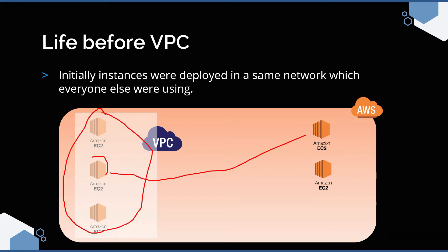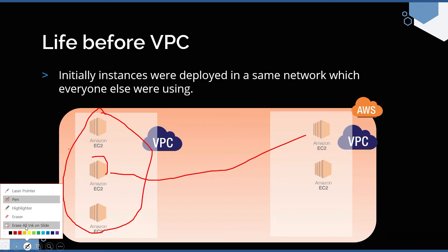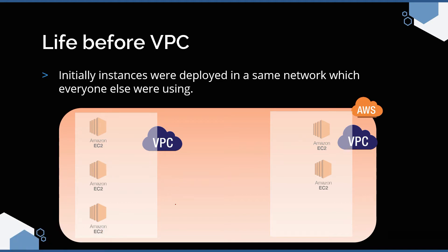Let's assume you have set up your infrastructure within your VPC and your competitor has also set up their infrastructure in their corresponding VPC. Do you think these two applications deployed in separate VPCs will be able to talk to each other? The answer is no. The application deployed in one EC2 instance will not be able to communicate to any resource deployed in another VPC. This communication is totally not possible and your resource is completely secure within your VPC.